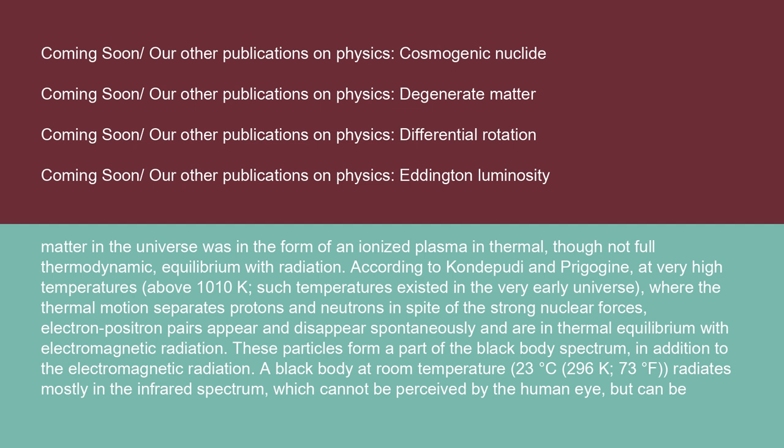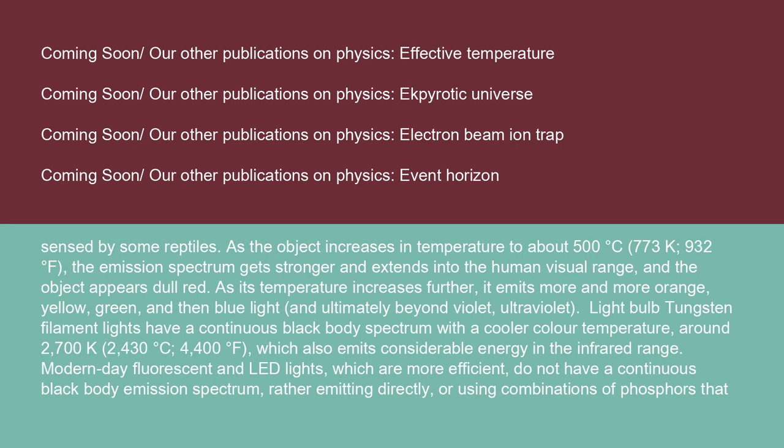A blackbody at room temperature (23°C / 296 K / 73°F) radiates mostly in the infrared spectrum, which cannot be perceived by the human eye, but can be sensed by some reptiles. As the object increases in temperature to about 500°C (773 K / 932°F), the emission spectrum gets stronger and extends into the human visual range, and the object appears dull red.